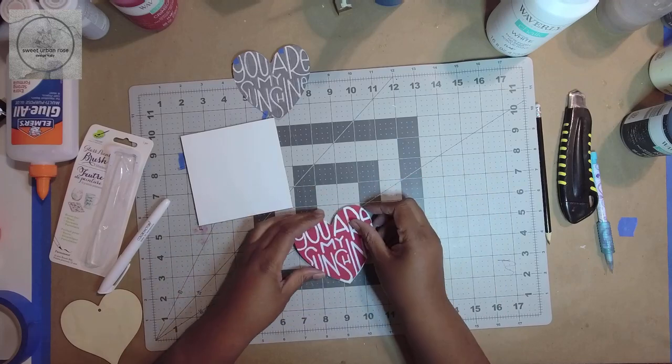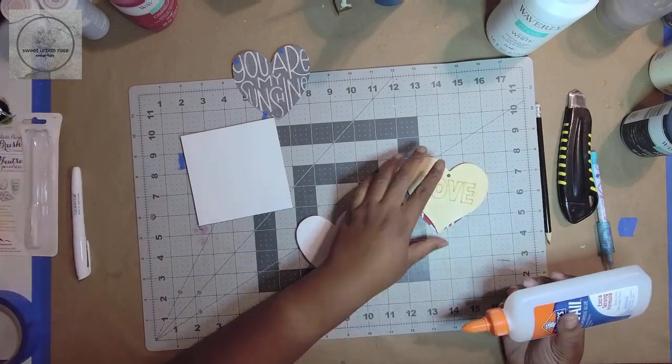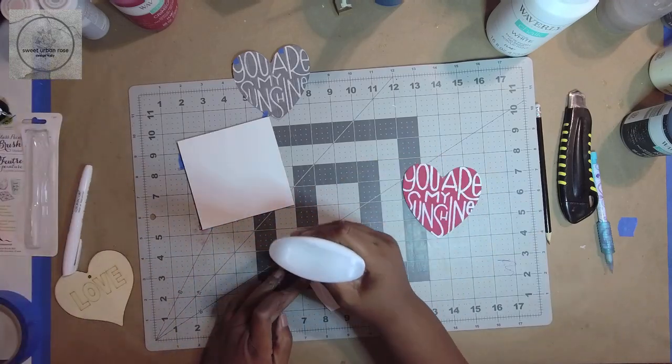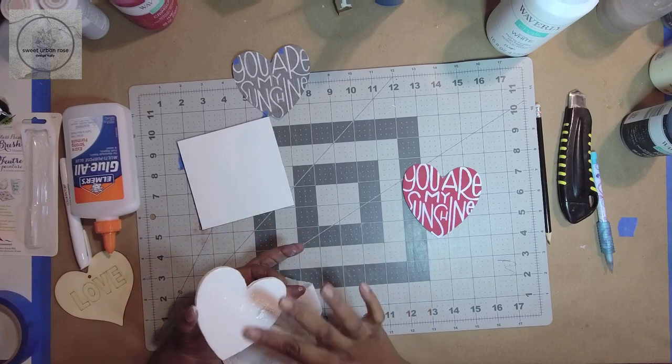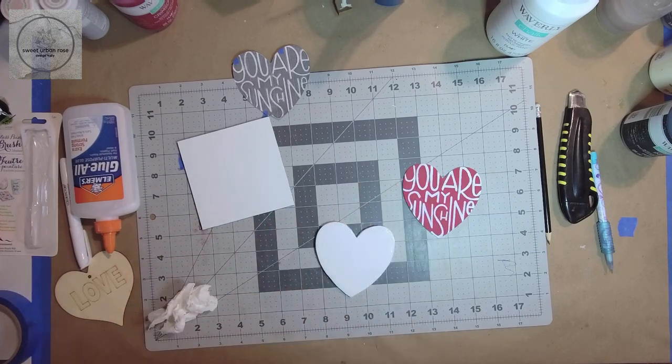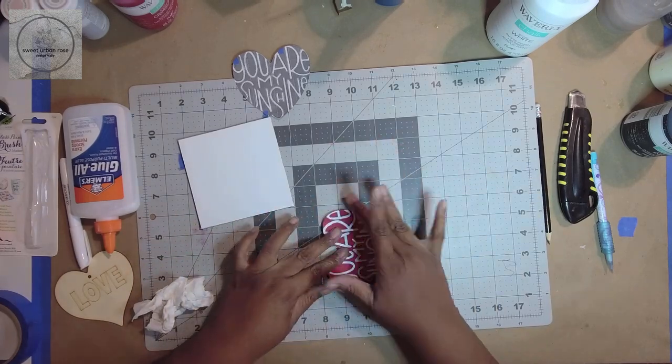I wanted to make the heart a little more sturdy, so I traced it onto foam core board and cut it out. An alternative is to use the wood heart cutout, or you can skip this step altogether. I glued the heart to the foam board and set it aside to dry.